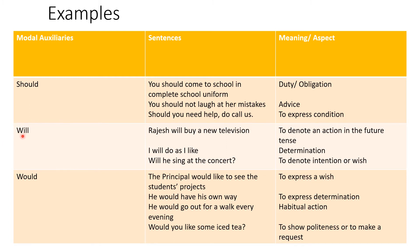The next modal auxiliary 'will': 'Rajesh will buy a new television' denotes an action in the future tense. 'I will do as I like' conveys determination. 'Will he sing at the concert?' denotes intention or wish.